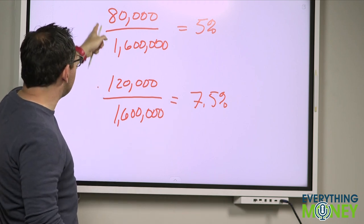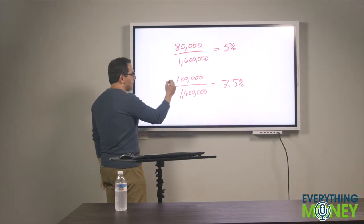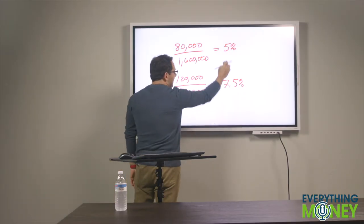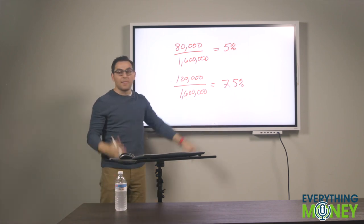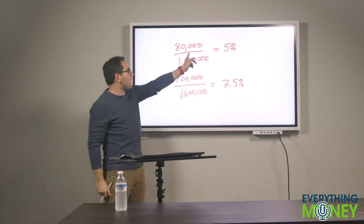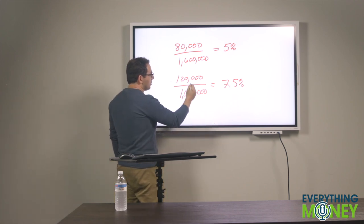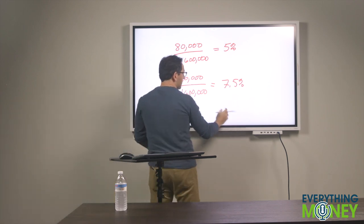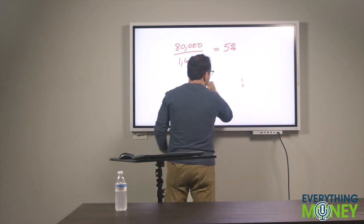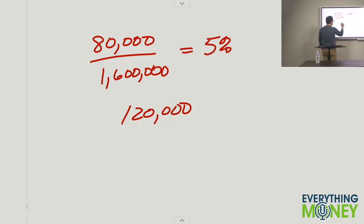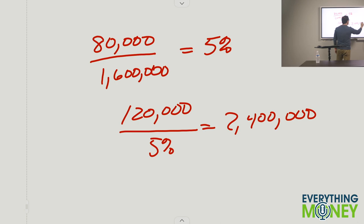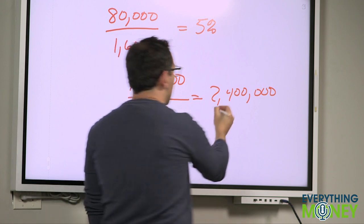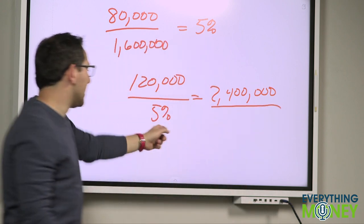So if I can figure out a way that I can increase revenue or decrease expenses enough to increase my profit by $40,000, I'm going to increase my cap rate and I'm going to get a higher return on my property. Now, let's say the market for this property is still 5%. Now that $120,000 in profit divided by the 5% return equals $2.4 million in value. So I paid $1.6 for it. I increased the profit to $120,000. Now my property is worth $2.4 million at the same 5% cap rate.